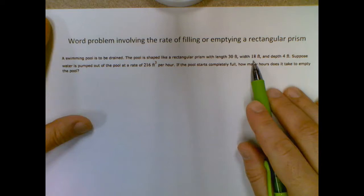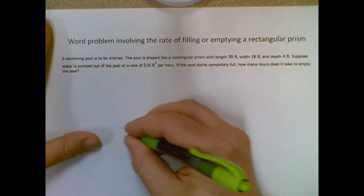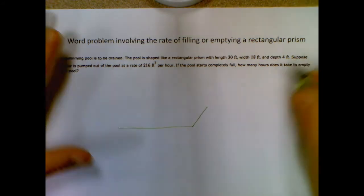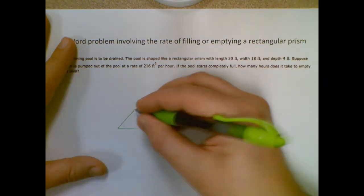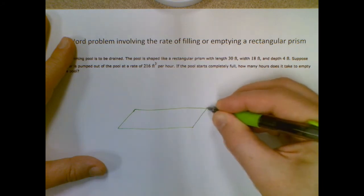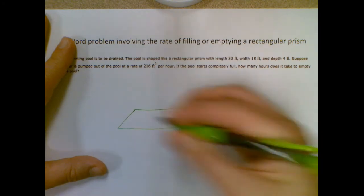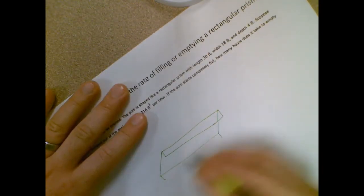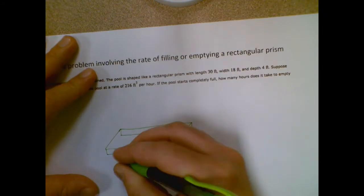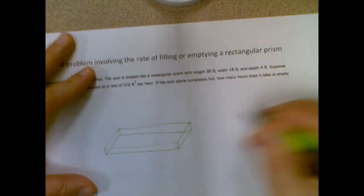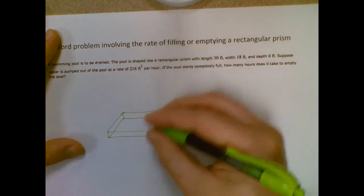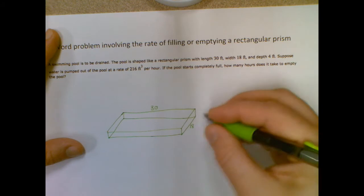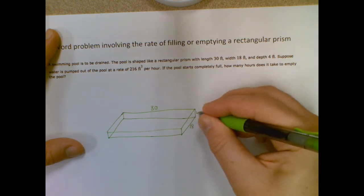we have 30 feet, so it's 30 feet wide, 18 feet this way, and only 4 feet deep. So I actually could just step out of this thing. All right, so we got 30 feet long, 18 feet wide, and 4 feet deep.